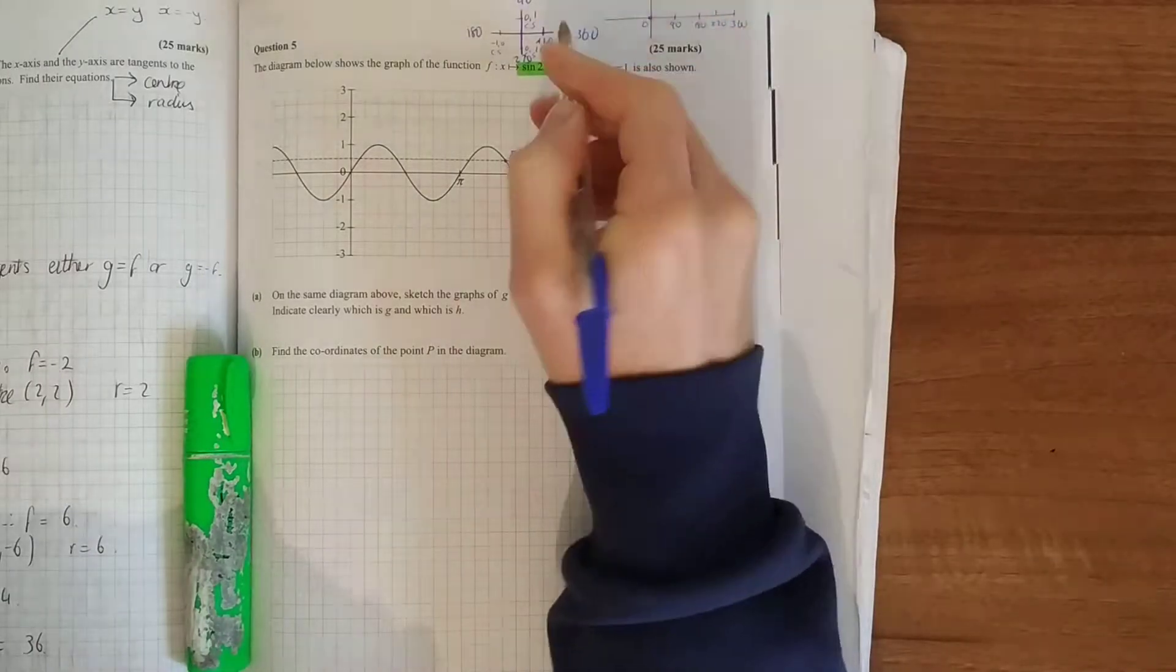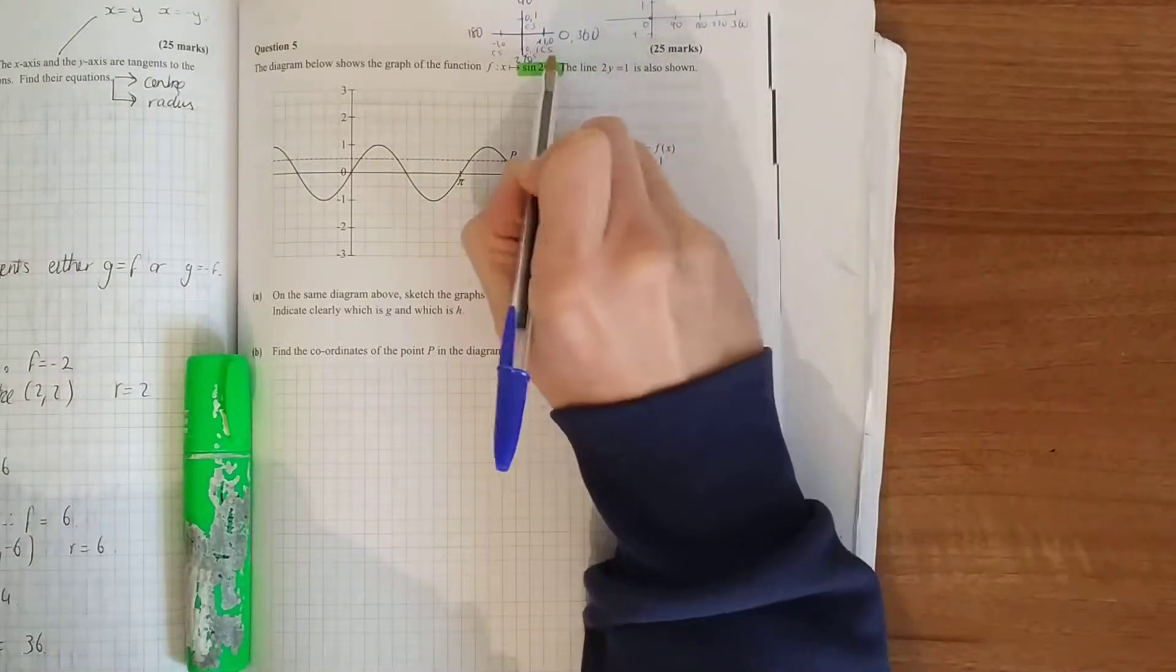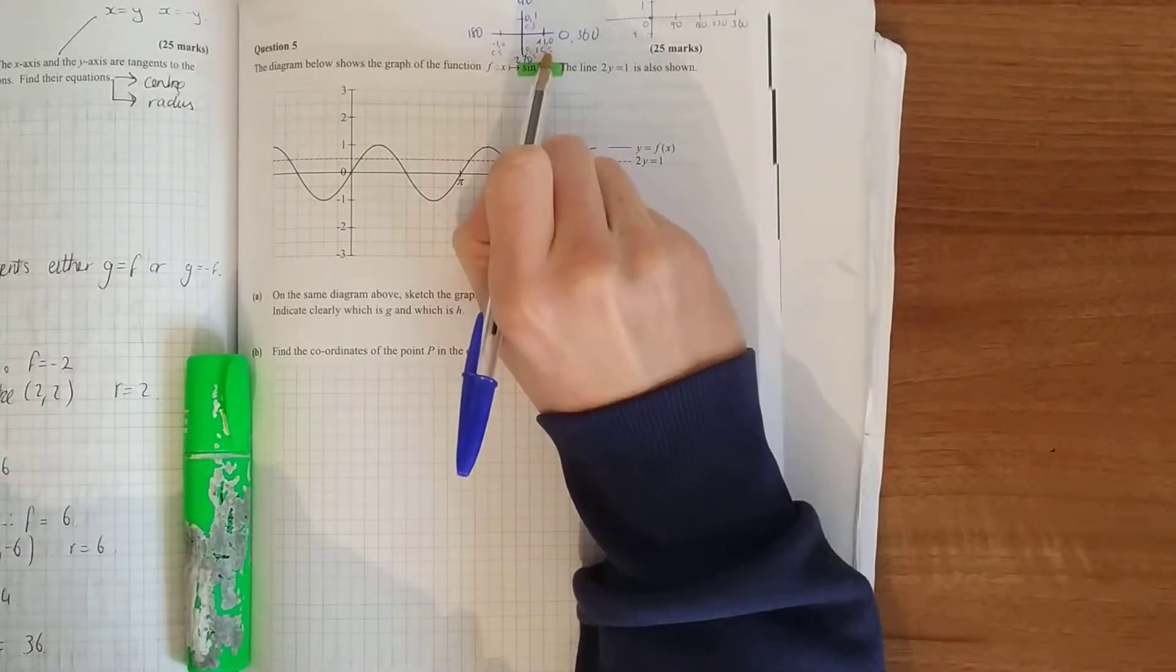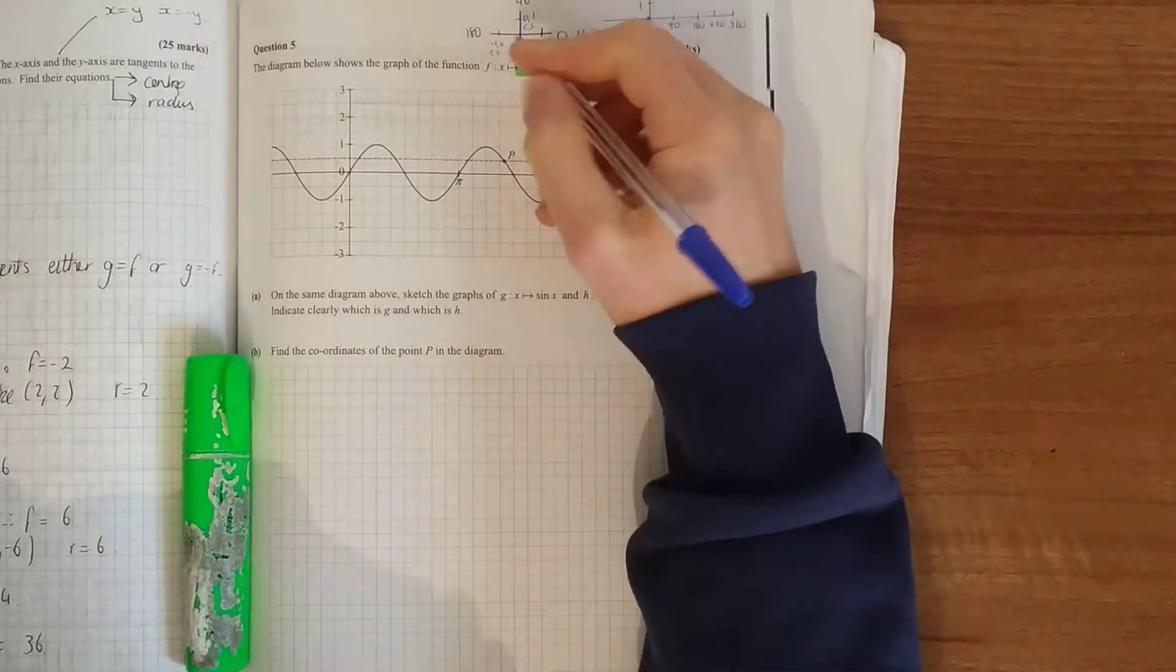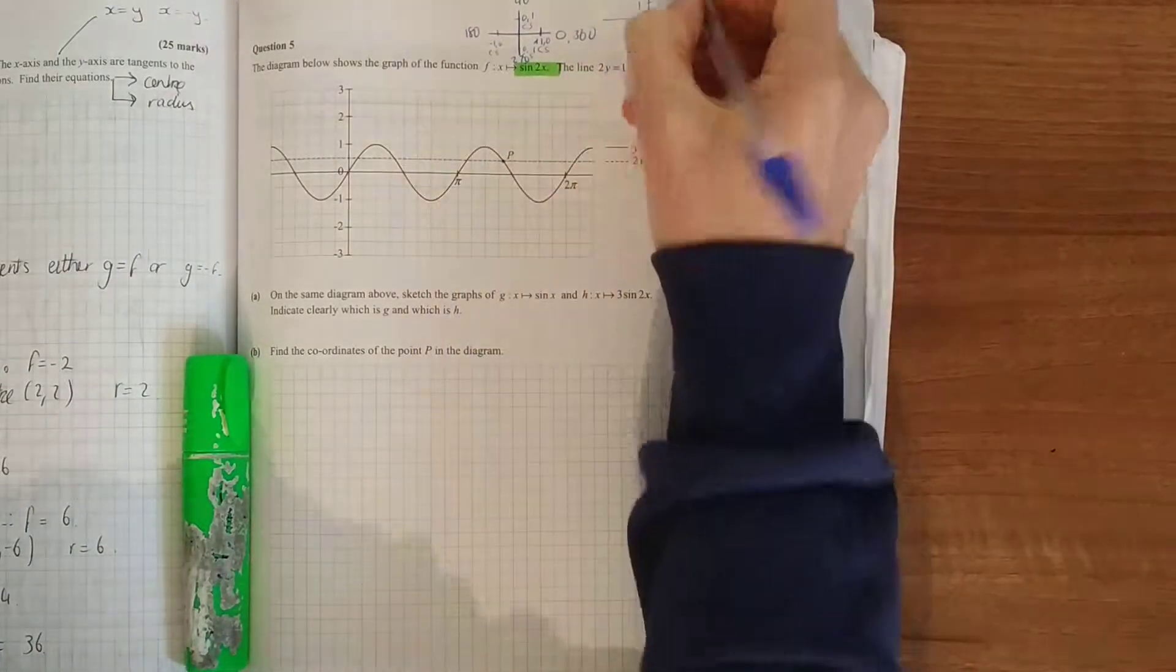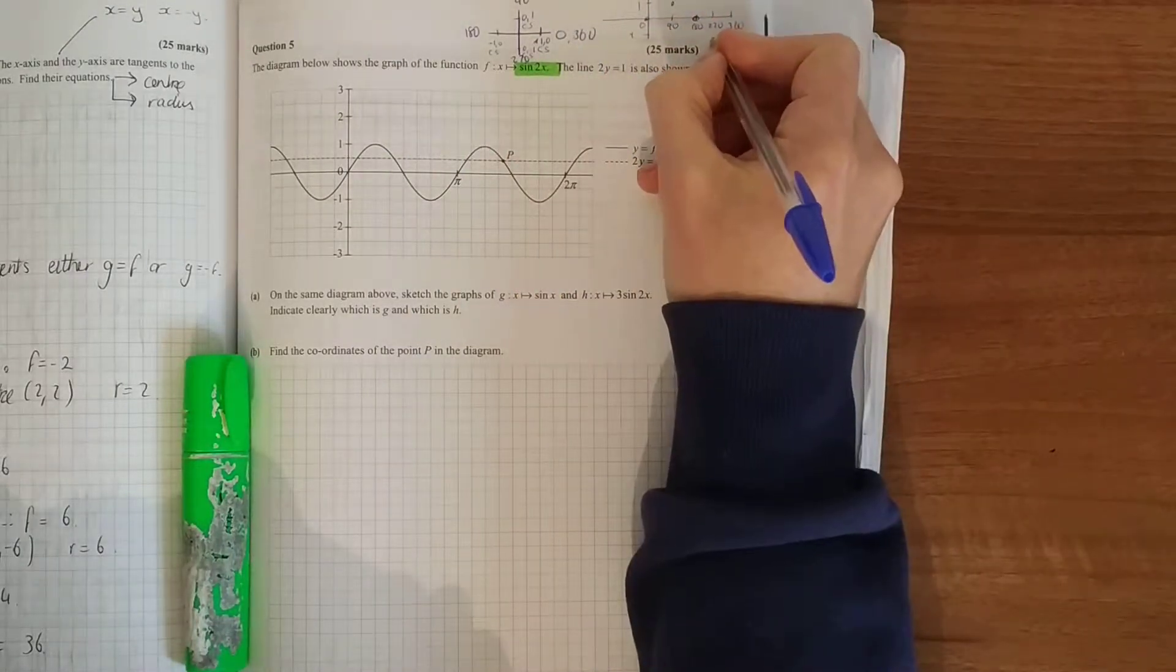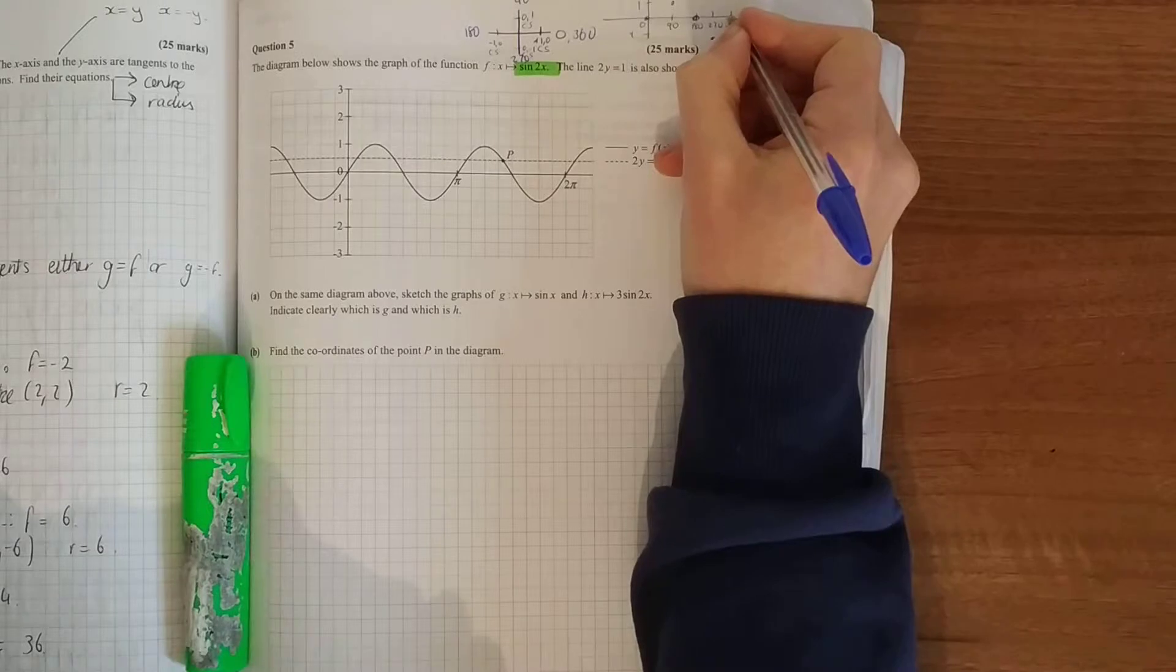For a normal sine function and minus 1, when sine is 0 degrees we have 0, sine is 90 degrees you have 1, sine of 180 is 0, sine of 270 is minus 1, sine 360 back up to 0.